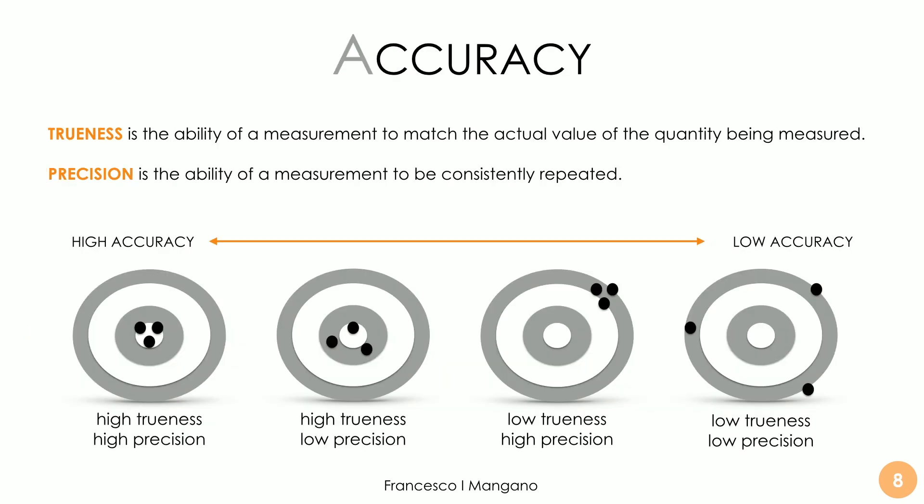Trueness is the ability of a measurement to match the actual value of the quantity being measured. As we can see from this graph, trueness and precision cooperate in determining the final accuracy. We can have an intraoral scanner that is highly true but has low precision, or one with very low trueness and high precision. What we want to achieve is high accuracy, because with high accuracy we can really trust our model and use it for clinical purposes. The key is to have both high trueness and high precision at the same time.